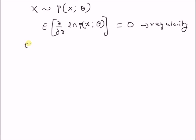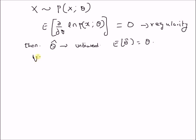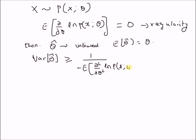If this regularity condition is satisfied, then the variance of any unbiased estimator of theta — that is, for any estimator theta-hat where the expectation of theta-hat equals the true value of theta — the variance of theta-hat is lower bounded by the inverse of the negative expectation of the second derivative of the logarithm of the likelihood function p(x|theta), where the expectation is taken with respect to the distribution p(x; theta).